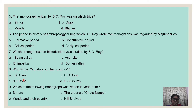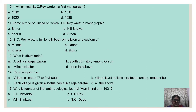In which year did S.C. Roy write his first monograph? The right answer is 1912. The name of the tribe of Odisha on which S.C. Roy wrote a monograph is Hill Bhuiya. S.C. Roy wrote a full-length book on religion and customs of which tribe? The correct answer is Oraon. What is Dhumkuria? The correct answer is B — youth dormitory among the Oraon. What is the Parha system? It is a village cluster of seven to nine villages, a political organization among the Oraon tribe, where each village is given a status name like Raja Parha, etc. — the answer is all the above.